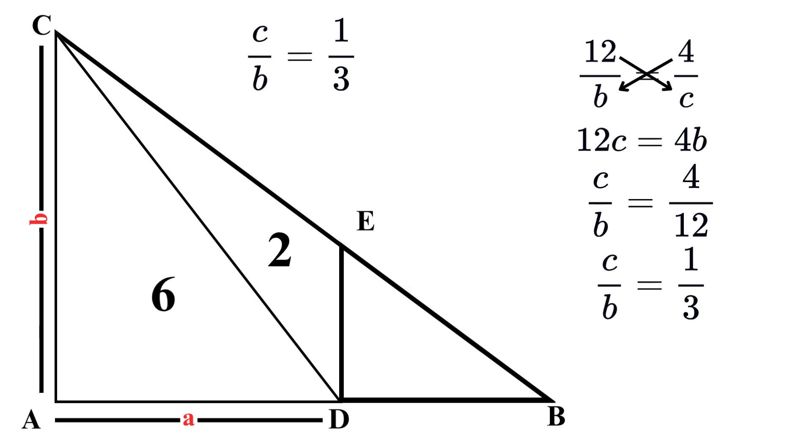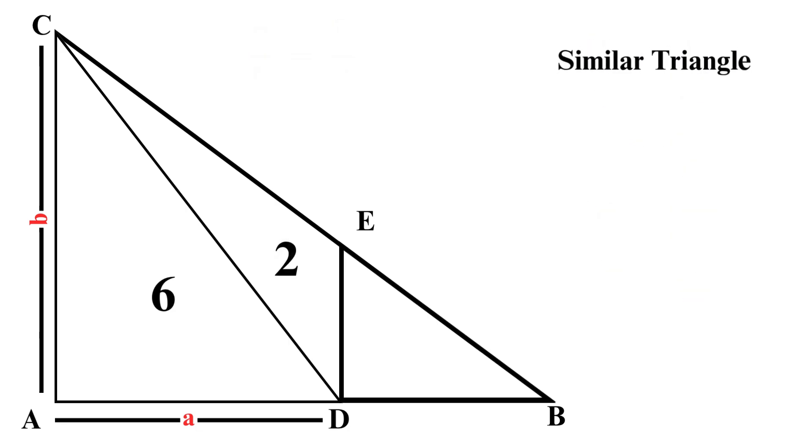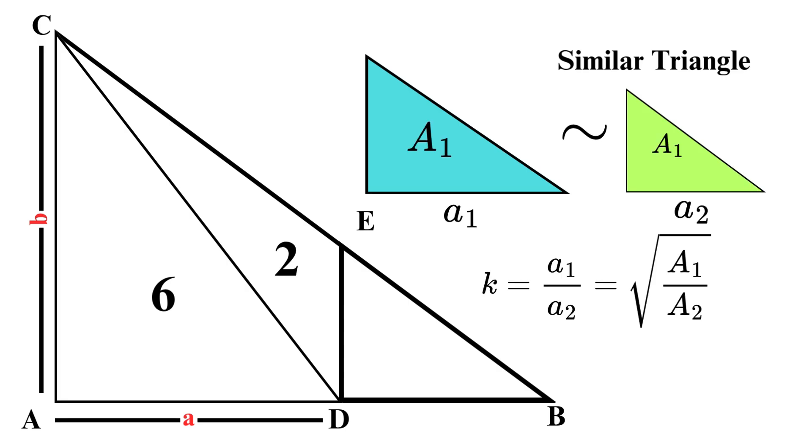Now let's use an interesting property of similar triangles. This property states that if we have two similar triangles, the ratio of their corresponding sides can be calculated as the square root of the ratio of their areas. We're going to use this fact in our favor.